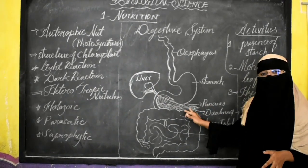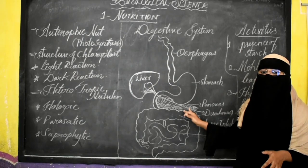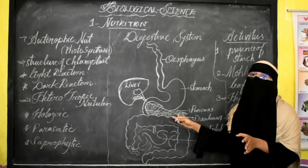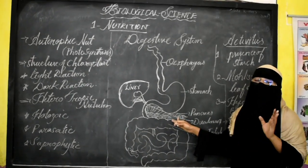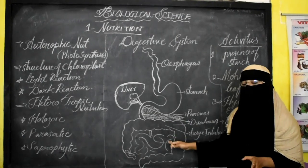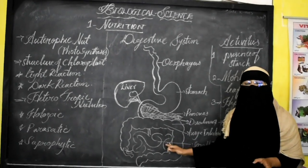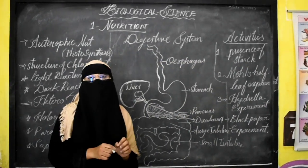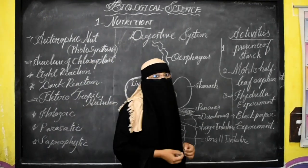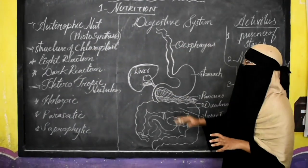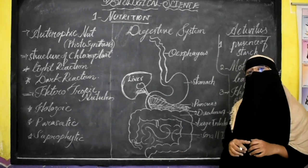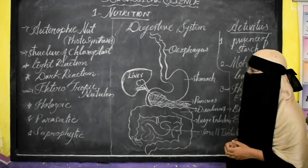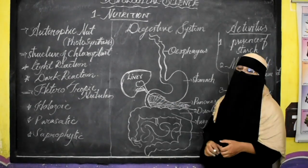In the buccal cavity, saliva is released containing the enzyme amylase. In the stomach, gastric juice is released containing the enzyme pepsin. The liver releases bile juice and the pancreas releases three enzymes — amylase, lipase, and trypsin — which act respectively on carbohydrates, fats, and proteins. Complete digestion takes place within the small intestine, so you need to know each enzyme's location, what it acts upon, and its function.